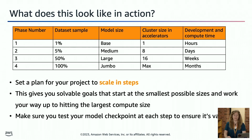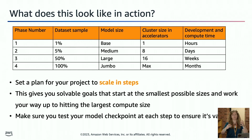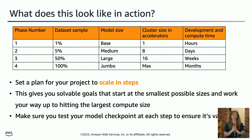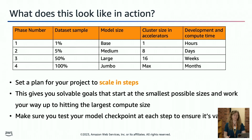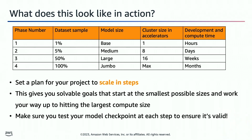Phase two is a bump: use more of the dataset, marry that with a larger model size, and increase the number of accelerators. So instead of one accelerator now you're using eight — eight Trainium chips, all in a single box. Development and compute time will be a couple of days. It's more complex, so it'll take a couple days to build this out, develop it, test it, optimize things, troubleshoot, and submit a ticket. Phase two is basically: can I use data parallelism to park my model on all eight of these accelerators and run the forward and backward pass?